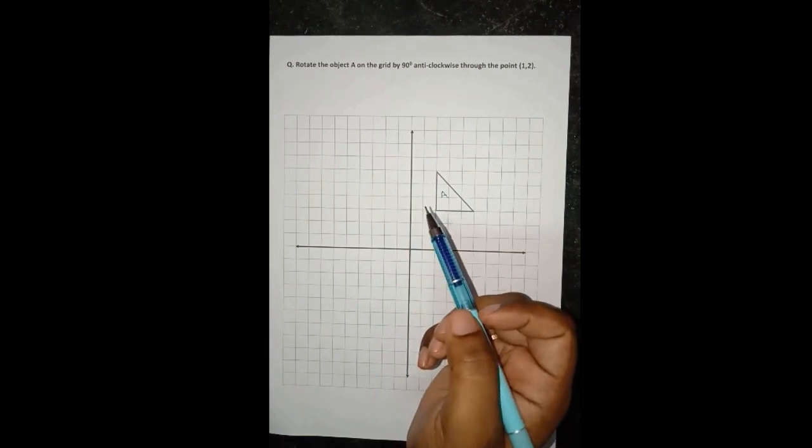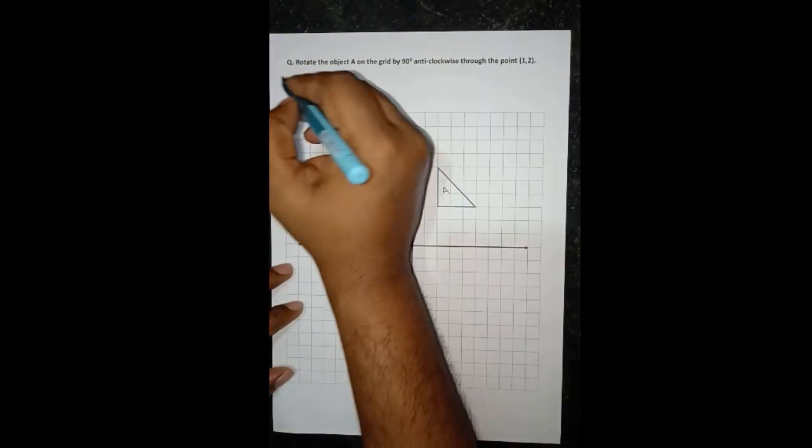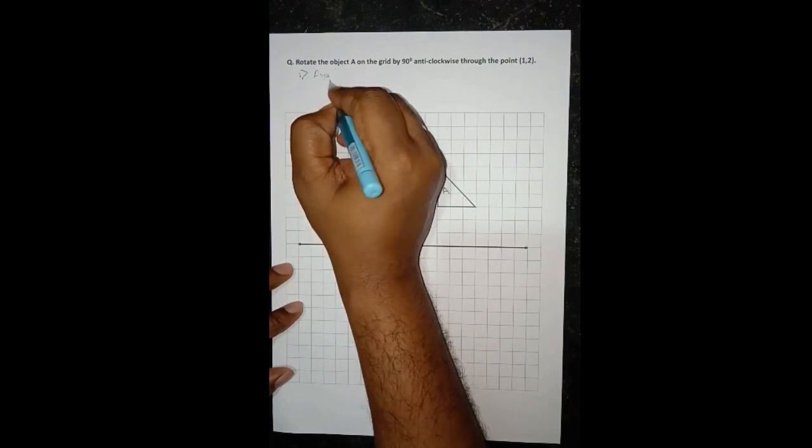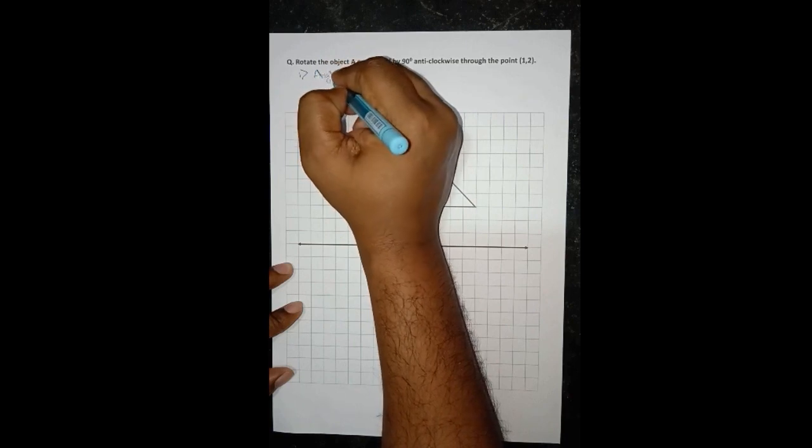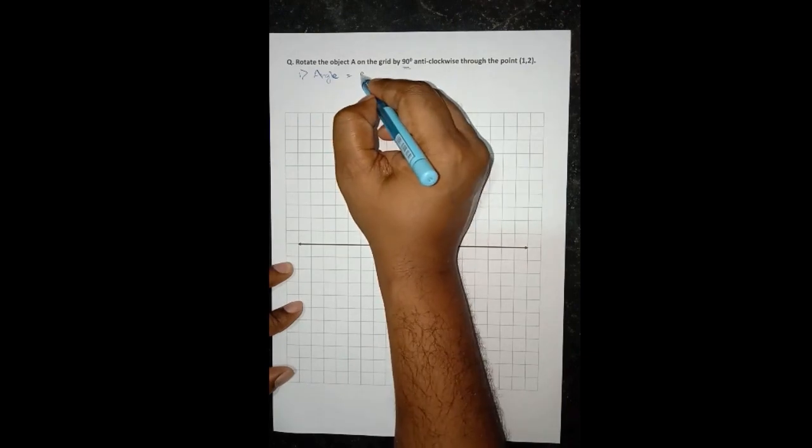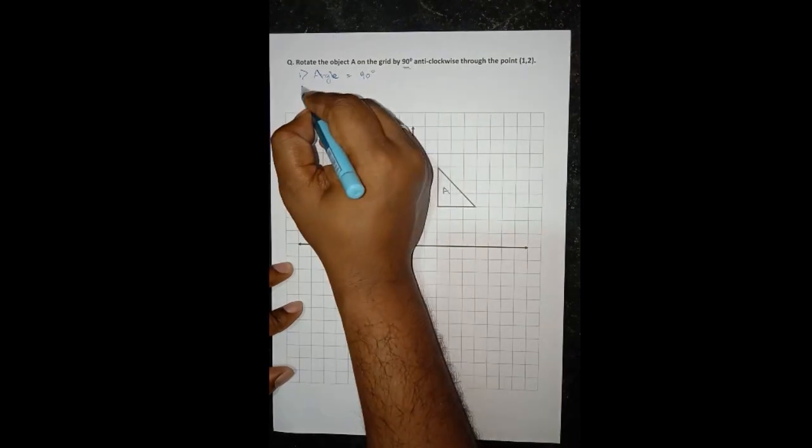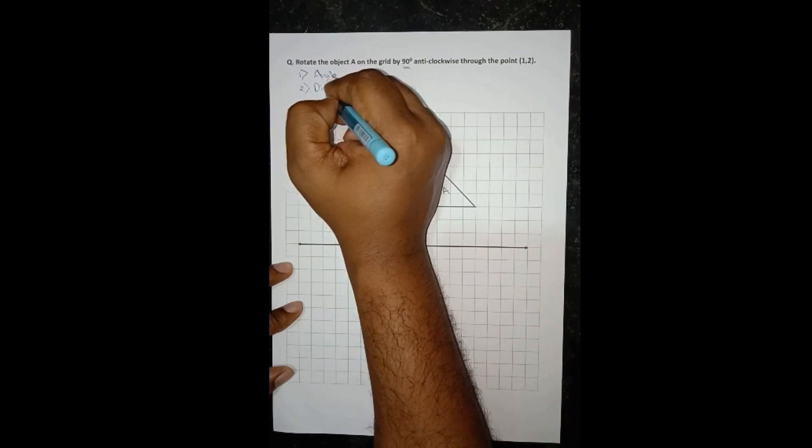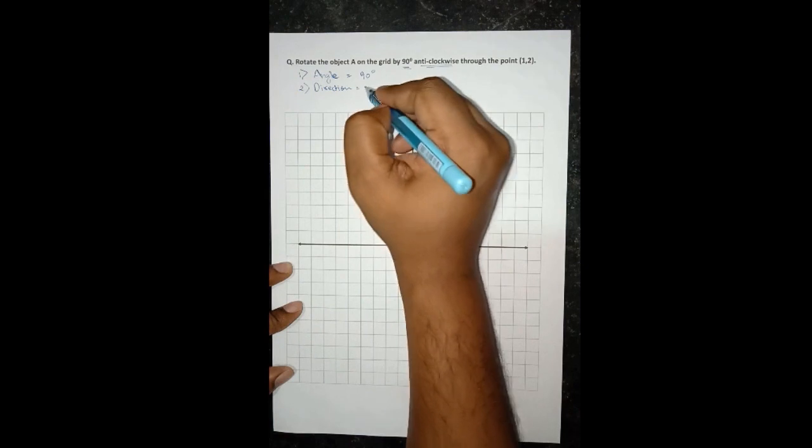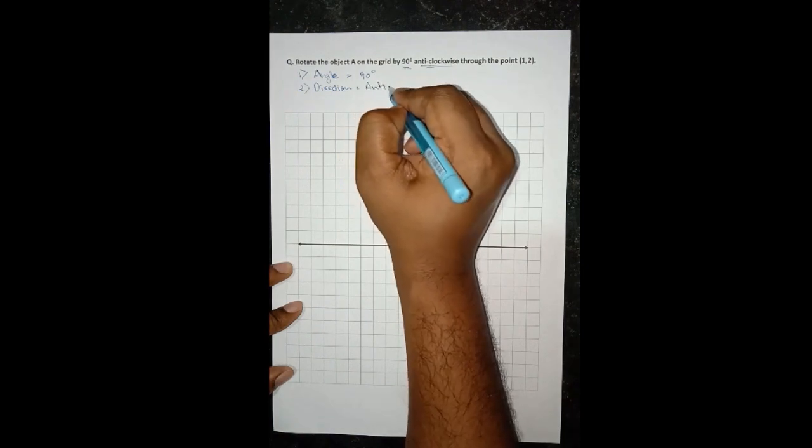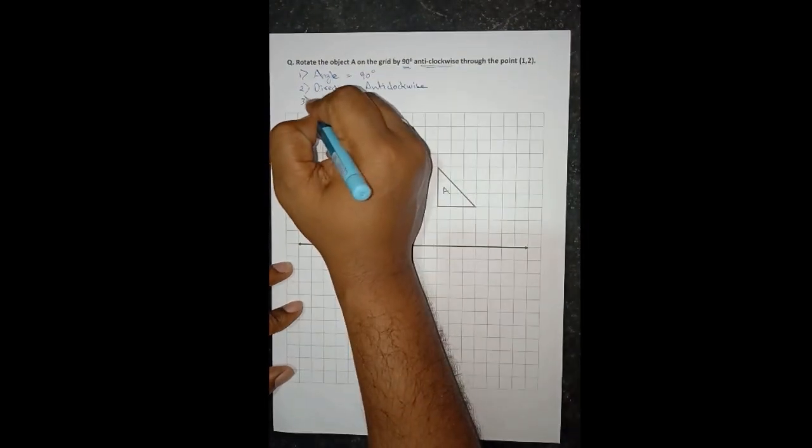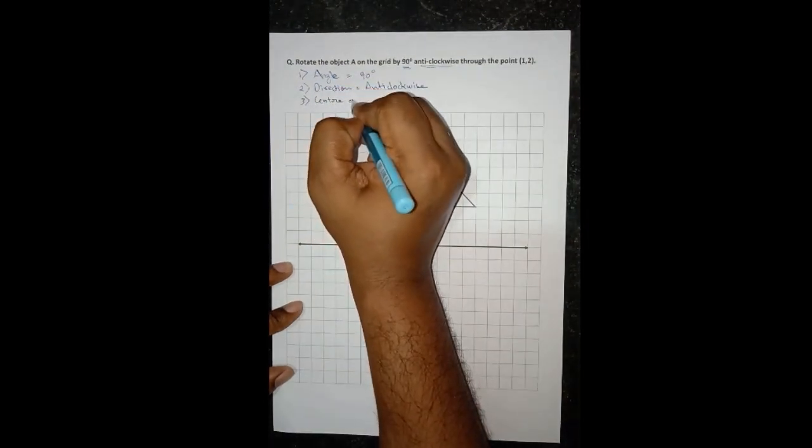To do this type of question we need to have three informations handy. The first information should be the angle, in this case the angle is 90 degrees. Second is the direction, it's also given, so it's anticlockwise.